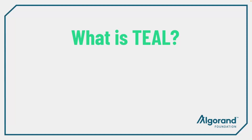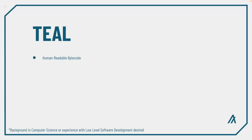In this video I'll be explaining what TEAL is and how it can be used to create smart contracts on Algorand. Put simply, TEAL is the human readable representation of the bytecode that runs on the Algorand Virtual Machine, or AVM.